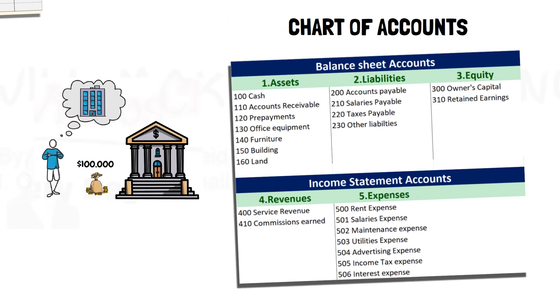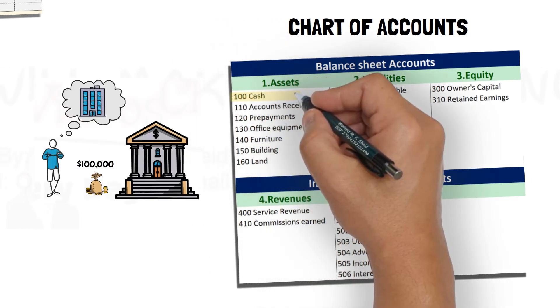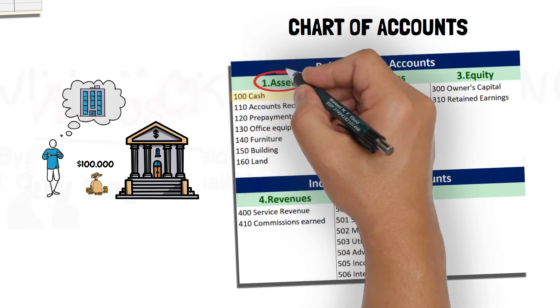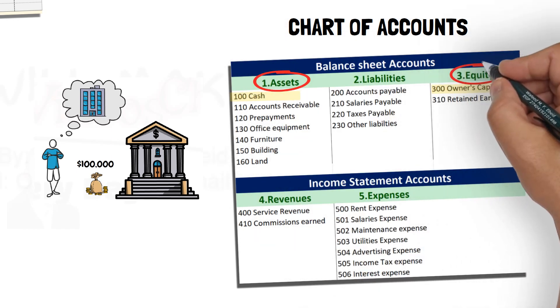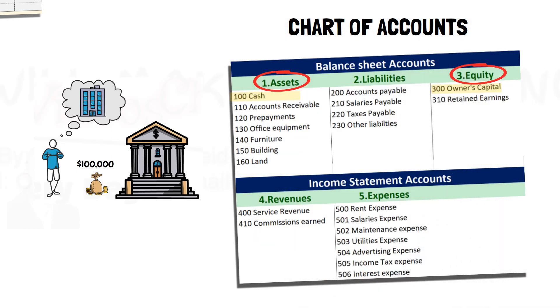In our example, the accounts affected by the transaction are the cash account, which is an asset account, and the capital account, which is an equity account that is used to record the owner's contribution to the business.